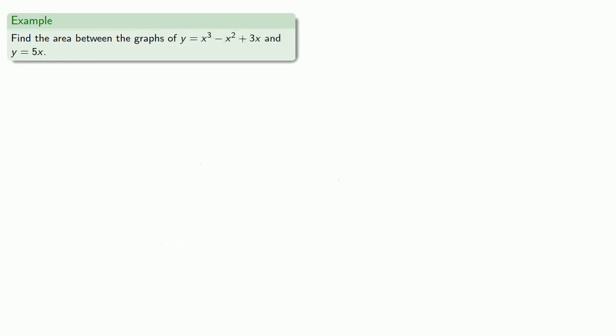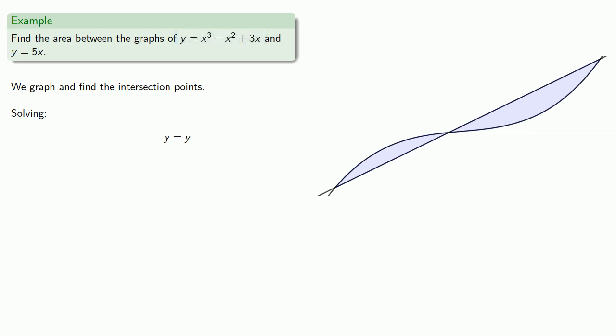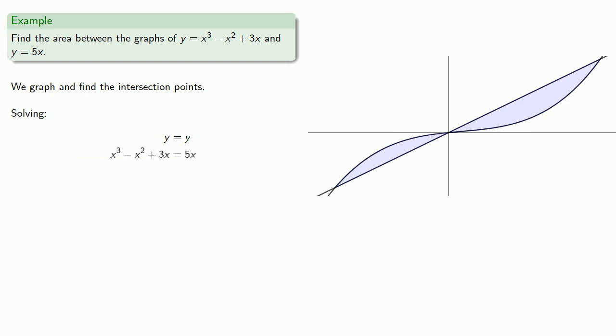Now let's find the area between y equals x cubed minus x squared plus 3x and y equals 5x. As with every other problem of this type, we begin by graphing and finding the intersection points. Where the graphs intersect the y-values are equal, and since equals means replaceable, we set x cubed minus x squared plus 3x equal to 5x and solve.